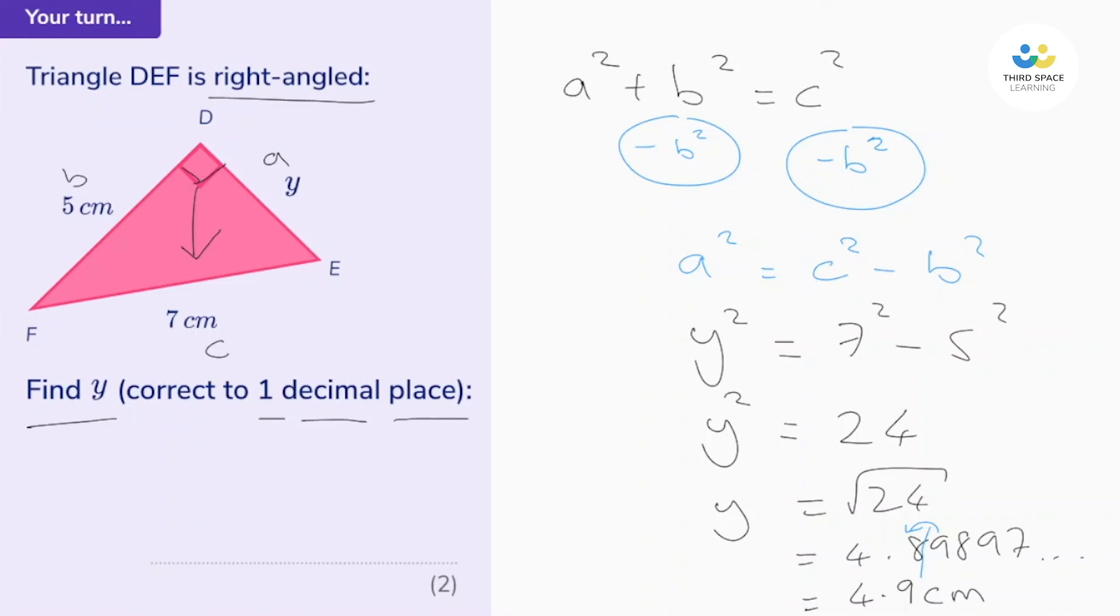Let's do a quick check to make sure the answer is sensible. So we wanted to work out one of the shorter sides, so 4.9 should be smaller than the longest side of the triangle, the hypotenuse, which is seven, and it is, so that looks great. So let's put that on the answer line: 4.9 centimeters.